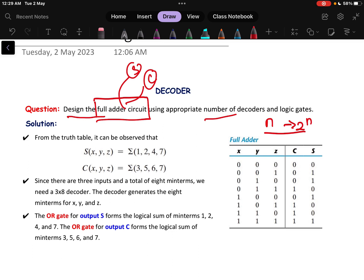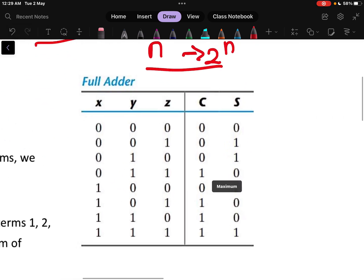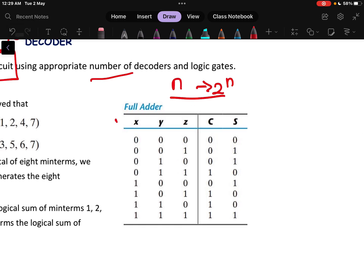Before proceeding to how to design with decoder we need to know what is the truth table of a full adder. Here you can see the truth table of a full adder is given, where the inputs are x, y, z - three input bits are there which needs to be added and after that one carry is generated and one sum is generated. This is a basic typical full adder truth table.